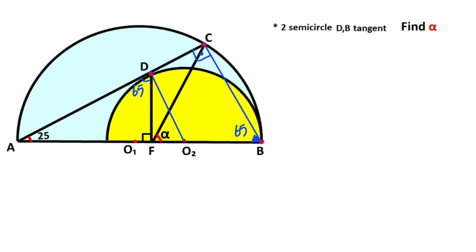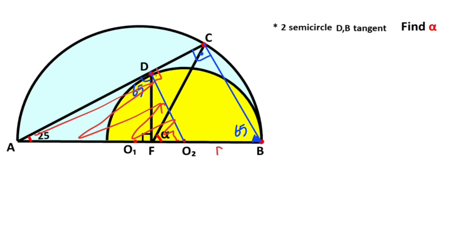After that, if we connect point D and O2, notice that these two lengths are also radii, so these two lengths are equal. We know that P is a tangent point, which means this angle is 90 degrees. Now if you focus on triangle ADO2, if here is 25 degrees, then angle DO2A is also 65 degrees.